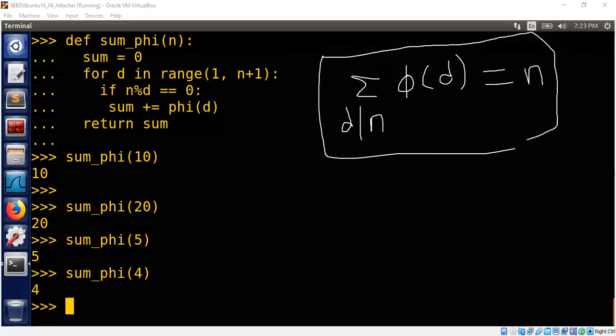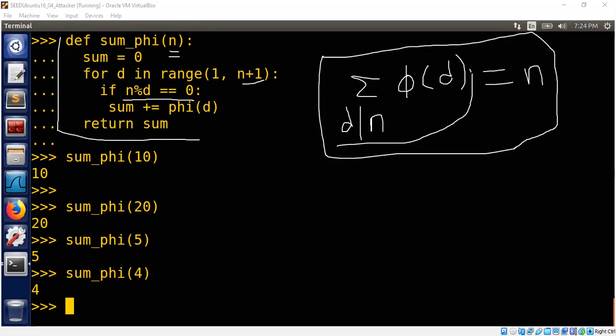We assume that n is greater than 0. We iterate through all the numbers from 1 through n. The reason I put n plus 1 is in Python the range ignores the upper bound. So we are looking for all numbers that divide n - that means n mod d equals 0. If that is true then we compute φ(d), keep adding to the sum, and at the end return the sum.